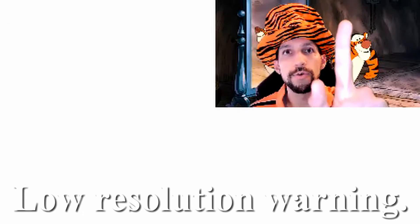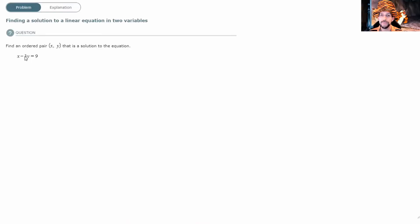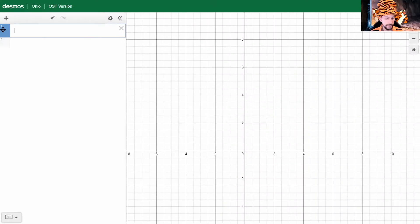Another one. Another one. x minus 3y equals 9. x minus 3y equals 9. All right, I see a point here. Boom, 9, 0. I see another point here. 0, negative 3. Either one will work.